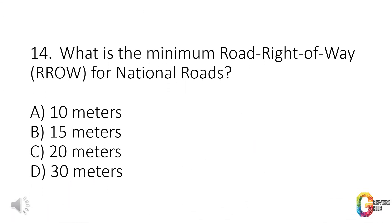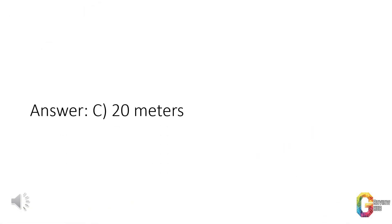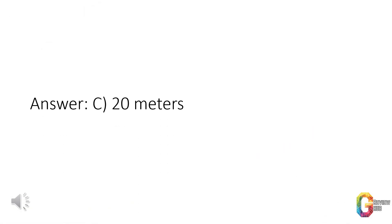Question 14. What is the minimum road right-of-way (RROW) for national roads? a. 10 m. b. 15 m. c. 20 m. d. 30 m. Answer: c. 20 m.